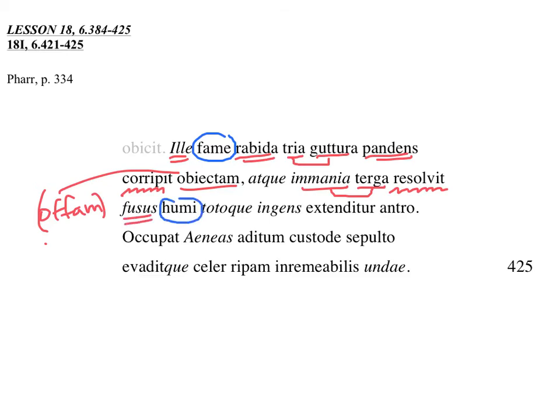This is the locative case, which shows location for cities, small islands, and several special nouns. So humus, it's a genitive form humi, which is the locative. So we don't say in humi, we just say humi. It's kind of like when you say domi, at home. You don't say in domi, you just say domi. That's locative also.